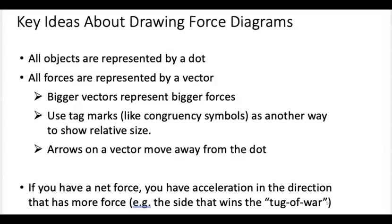All forces are represented by a vector. So you represent an object with a dot and a force with a vector. Now, a few things here. Bigger forces are represented with bigger vectors. We're going to see all of this in a moment. We're going to use tick marks, like congruency symbols in geometry, as another way to show the relative size of forces. And arrows on a vector move away from the dot. I'm going to drop these ideas down in your notes, and when we see some examples, it will make more sense.